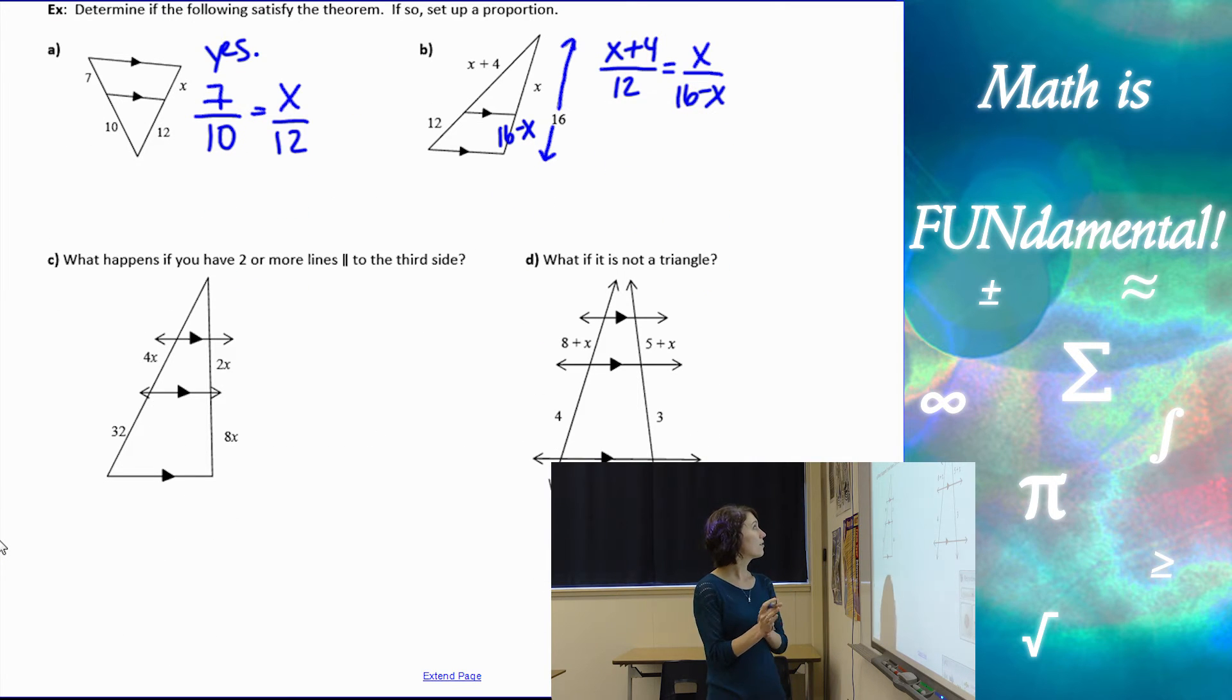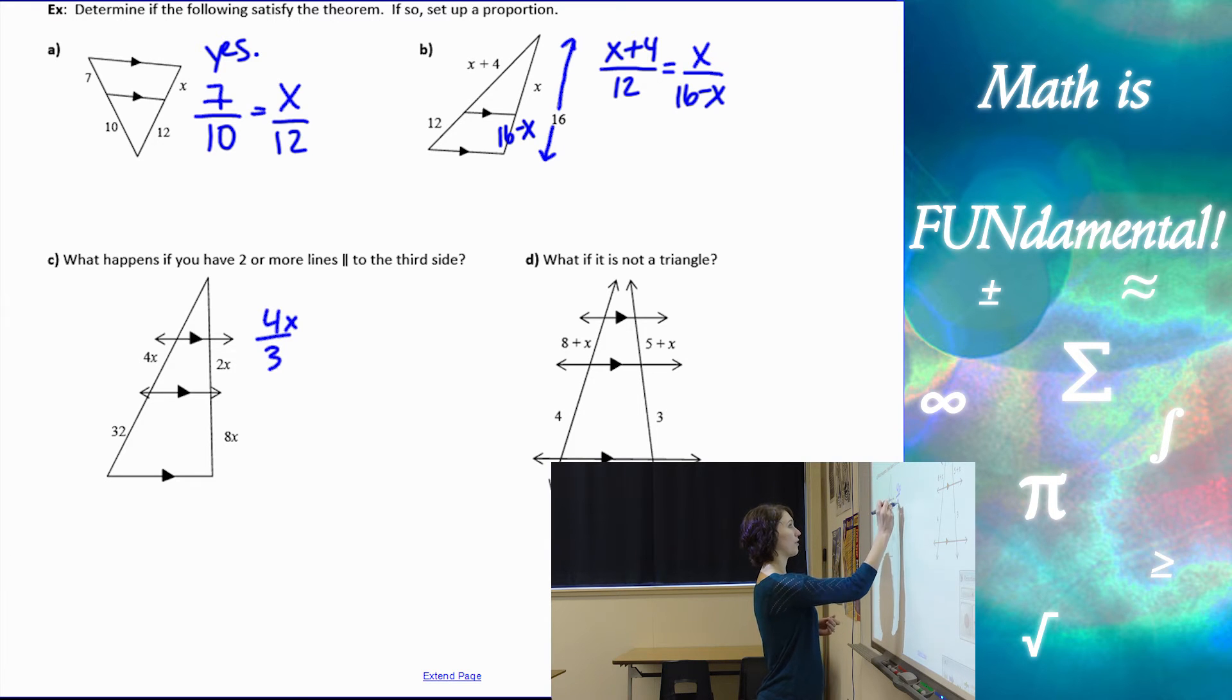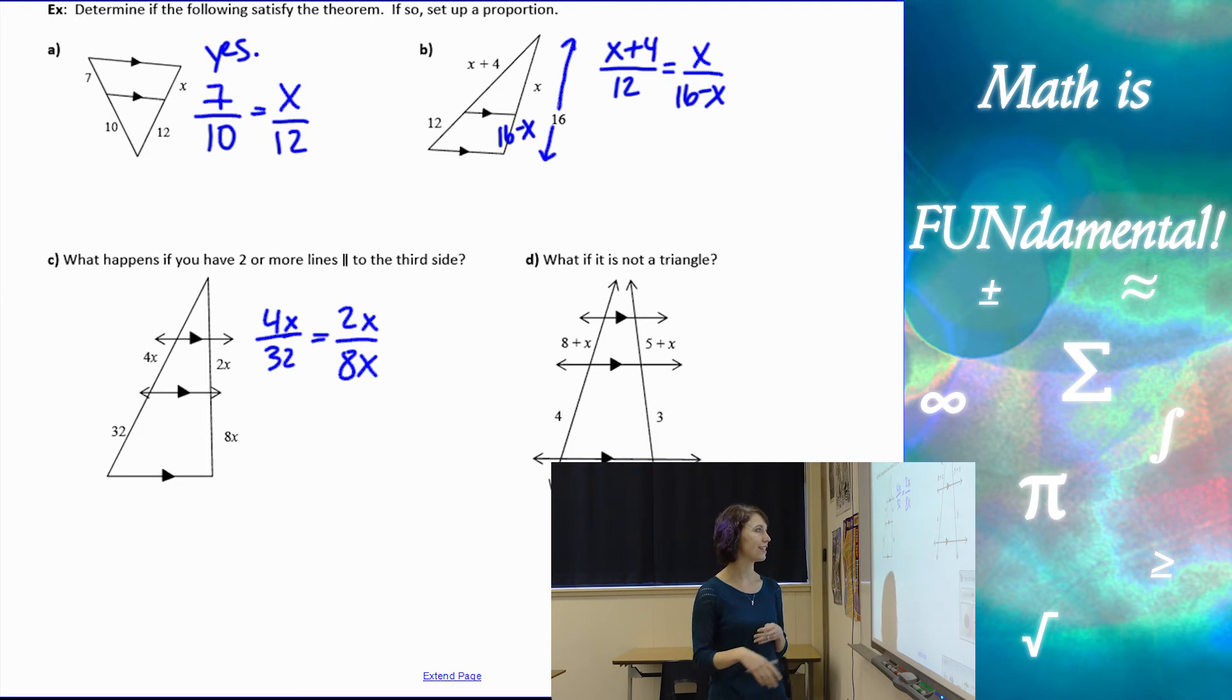So let's look at the next one. What happens if you have two or more lines parallel to the third side? Really cool. The theorem still works. So it's still going to divide it proportionally. So we're saying 4X over 32 is going to equal 2X over 8X, and we can cross multiply and solve.